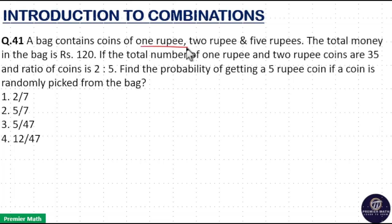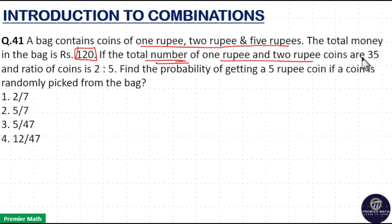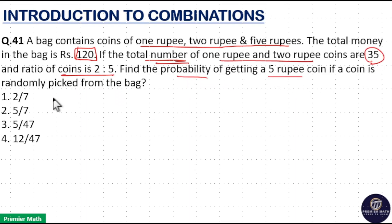A bag contains coins of one rupee, two rupee, and five rupees. The total money in the bag is rupees 120. If the total number of one rupee and two rupee coins are 35 and the ratio of coins is two is to five, find the probability of getting a five rupee coin if a coin is randomly picked from the bag.